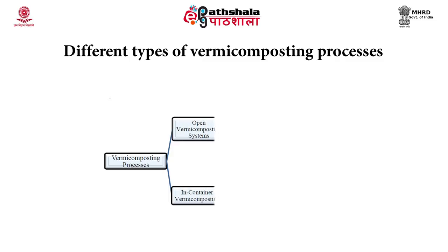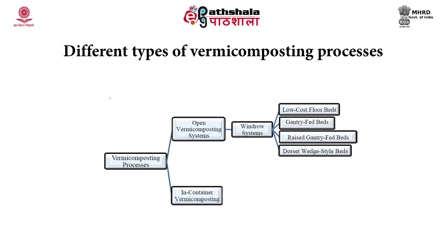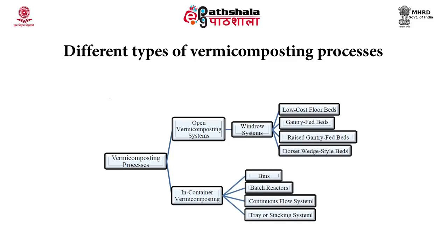Vermicomposting process can be of open type or in-container vermicomposting. In-container vermicomposting is carried out in an enclosed space. Open vermicomposting is also called a windrow vermicomposting system. The different types of windrow systems are low-cost floor beds, gentrified beds, raised gantry-fed beds and doorset wedge-style beds. Container vermicomposting systems include different types of bins, batch reactors, continuous flow systems and tray or stacking systems.